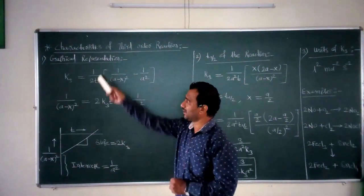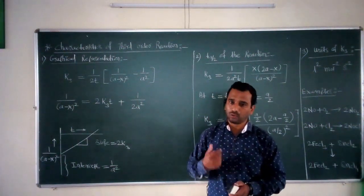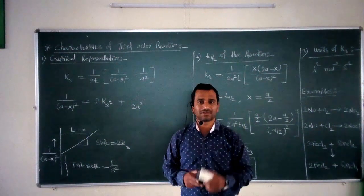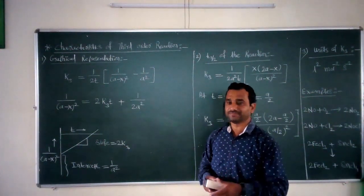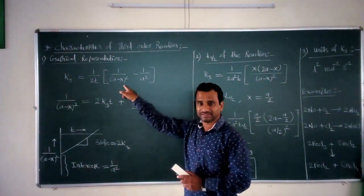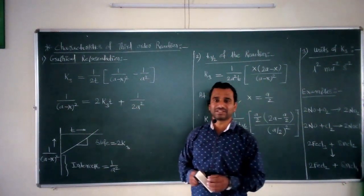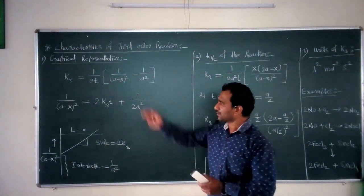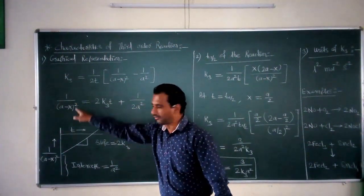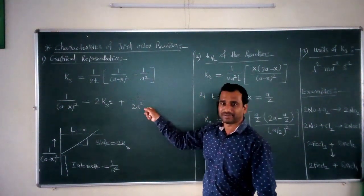The first important characteristic is the graphical representation. How to represent this third order reaction graphically and how to calculate a rate constant by a graphical method? For this purpose, we take the equation from the last video lecture: K3 = 1 / (2T) × [1/(a−x)² − 1/a²]. If we rearrange this equation, we get: 1/(a−x)² = 2K3·t + 1/a².